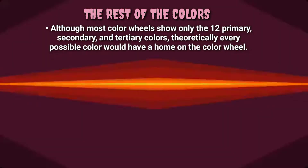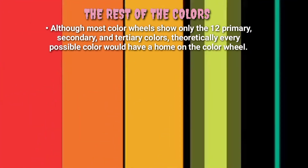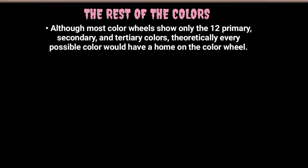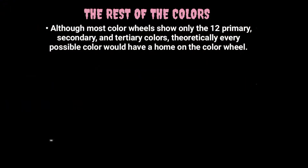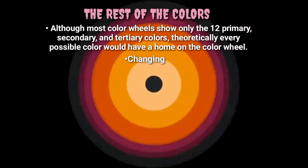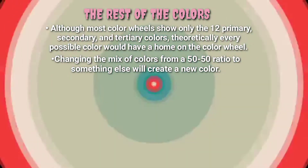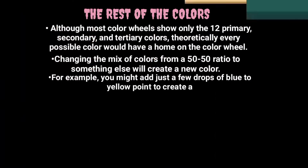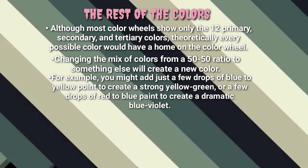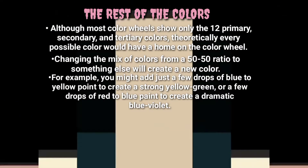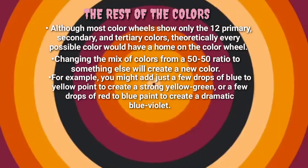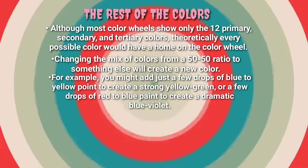Although most color wheels show only the 12 primary, secondary, and tertiary colors, theoretically every possible color would have a home on the color wheel. Changing the mix of colors from a 50/50 ratio to something else will create a new color. For example, you might add just a few drops of blue to yellow paint to create a strong yellow-green, or a few drops of red to blue paint to create a dramatic blue-violet.